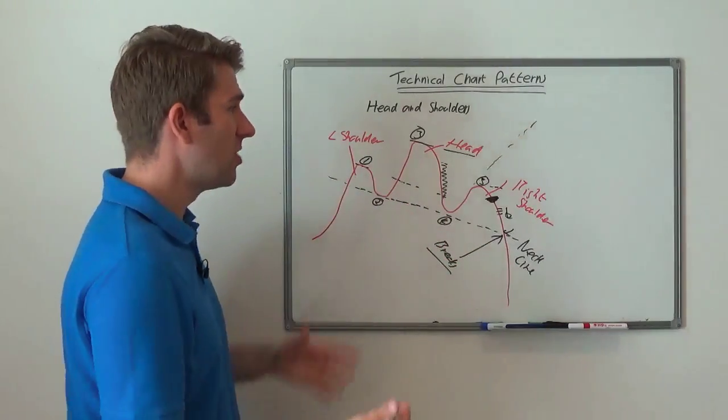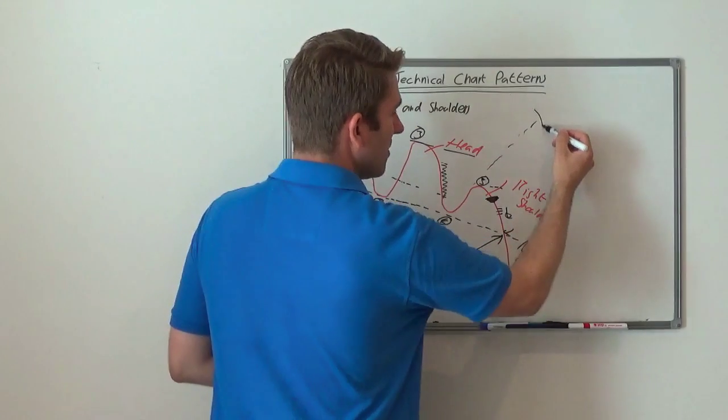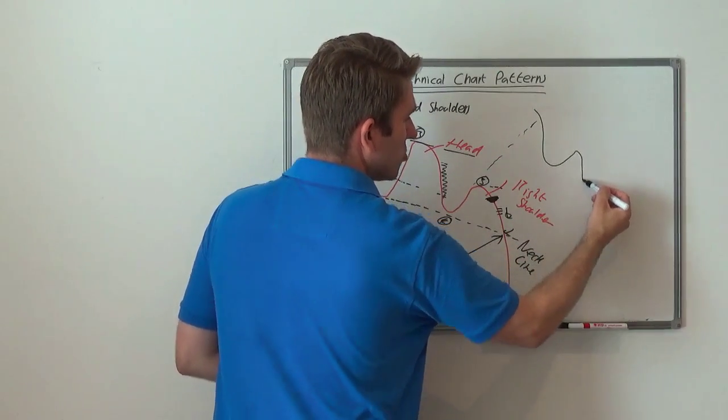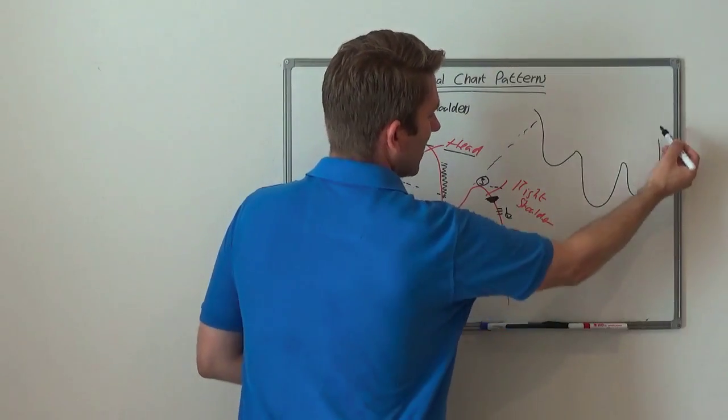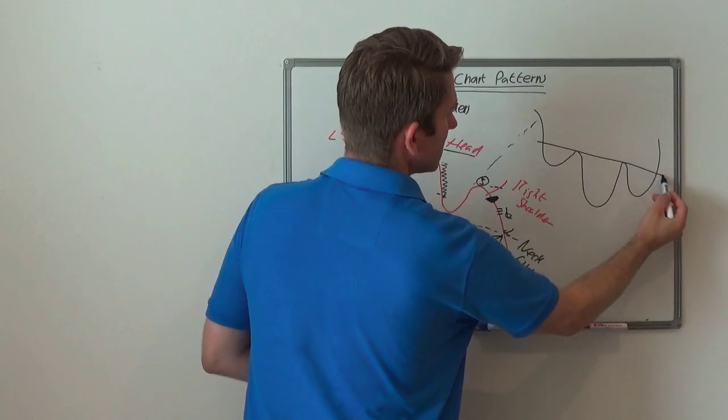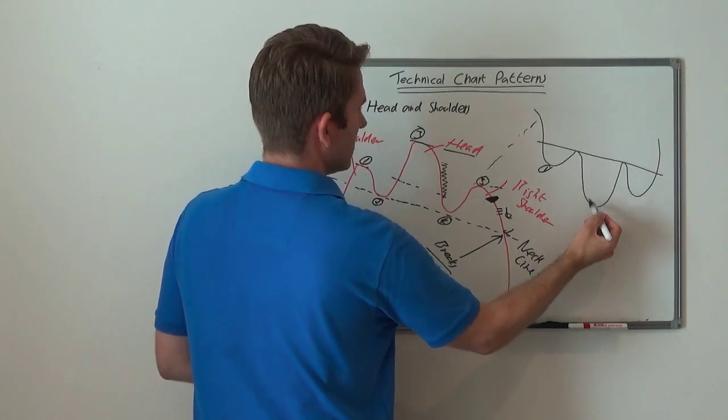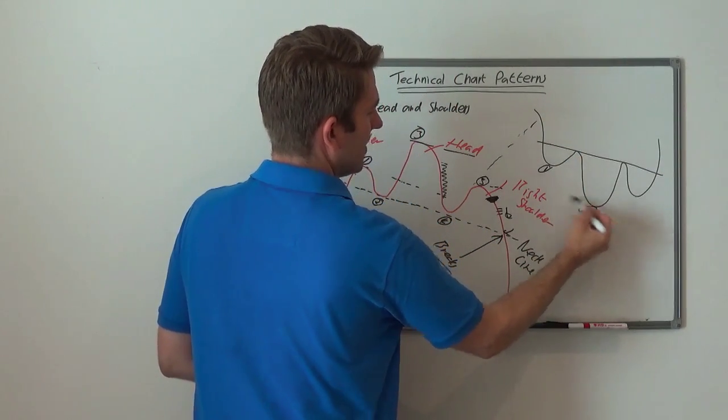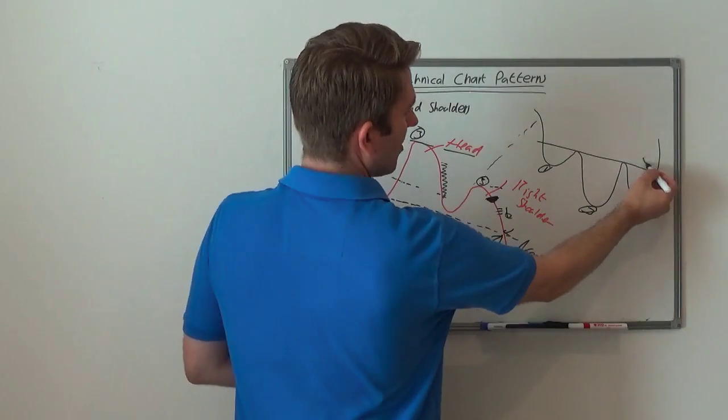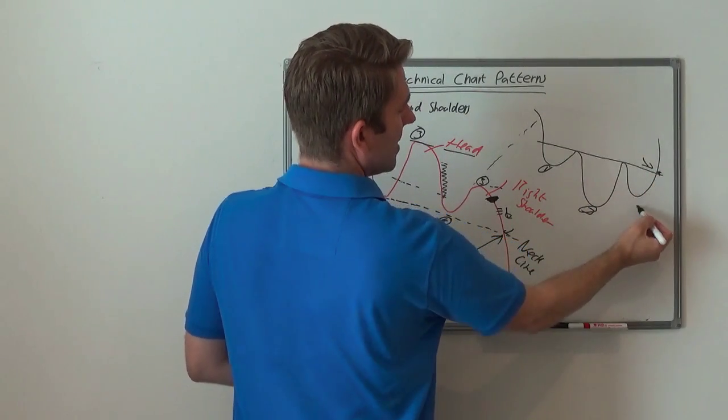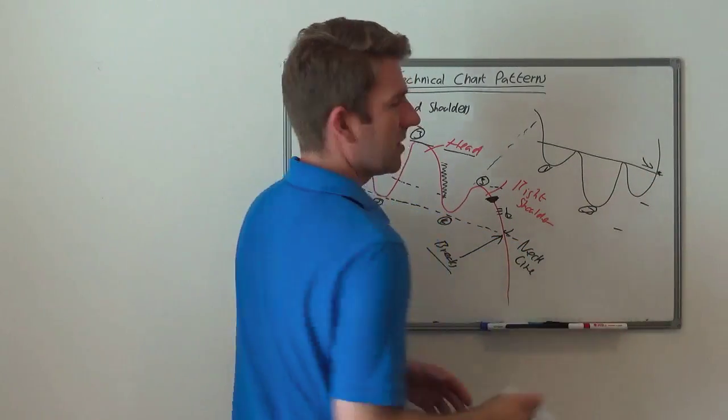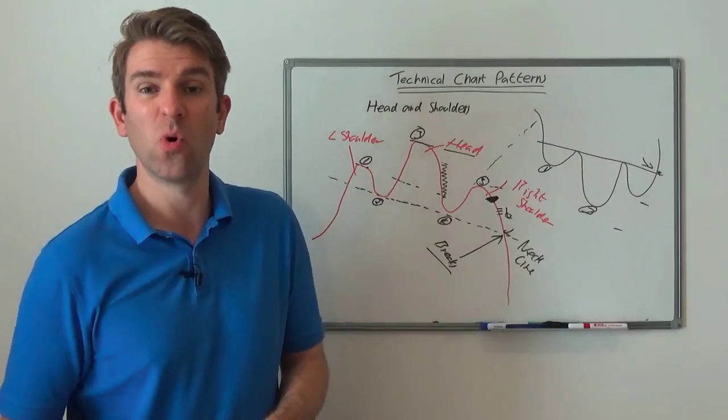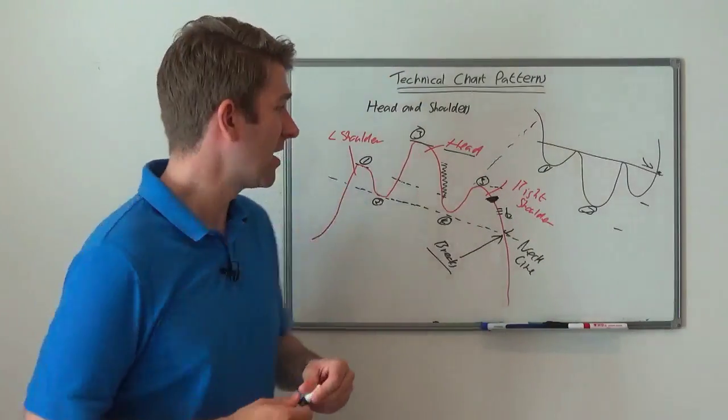Very quickly this is your inverse head and shoulders. You've got your push lower and that's kind of how it is. So your neckline becomes there. So there's your first shoulder here, there's your head, and there's your—I'm going to put your head as three, keep it the same. And there's your break here. So you go long on the break here and then I'll have your stop here. We'd have your stop under there depending on how risk averse or however it fitted into your trading.